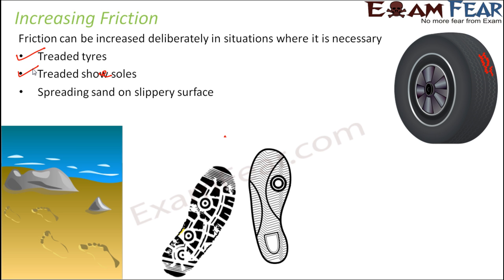Spreading sand on a slippery surface is another method. Suppose oil has been spilled over a surface in your house — you tend to slip over it because the surface has become slippery and friction has reduced. So if you want to increase the friction, you spread some sand over the surface. Sand particles are coarse, so when you spread sand over the surface it makes it completely rough. That is why it is very difficult to walk on sand near a sea beach — the friction there is too high, which makes it even difficult to walk.